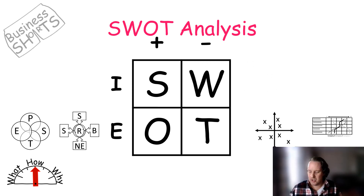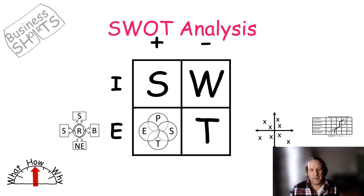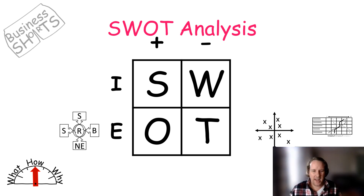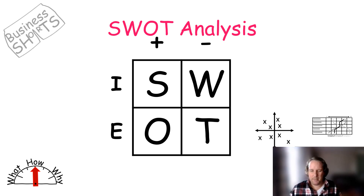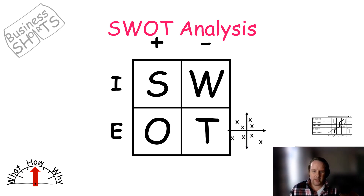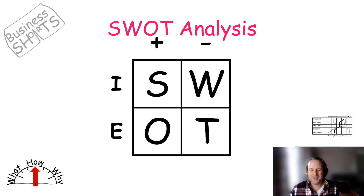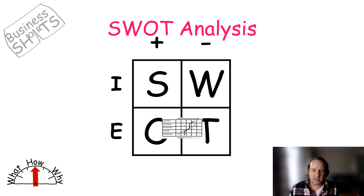Your macro environment, such as your PEST, is external, so your PEST will create your opportunities and threats. Porter's Five Forces is also external — a micro analysis — so that creates opportunities and threats. Your positioning map is external too, showing how you compete with competitors, so it produces positives or negatives. Finally, a competency or gap analysis is an external model that can also bring you strengths and weaknesses.